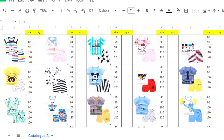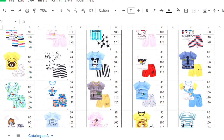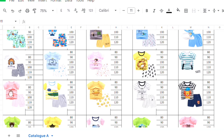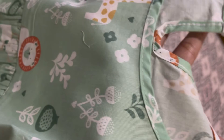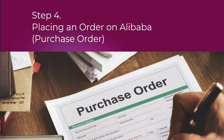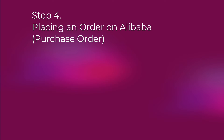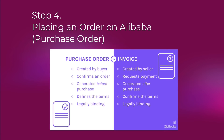Those are the things I mostly negotiate when importing. Feel free to add items depending on the product you're importing. Once negotiation is done, the next step is to place your order. You have to document everything you agreed with your supplier. A purchase order serves as a legal and structured document that outlines everything agreed with your supplier.